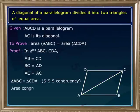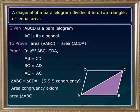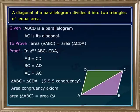By area congruent axiom, if two triangles are congruent, they have the same area. So, here, applying that we have area of triangle ABC is equal to area of triangle CDA. Now, let us learn a theorem on the area of parallelogram.